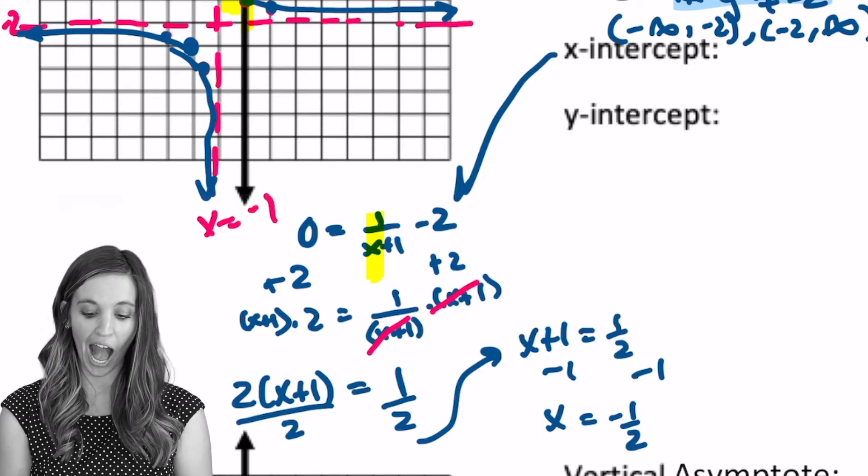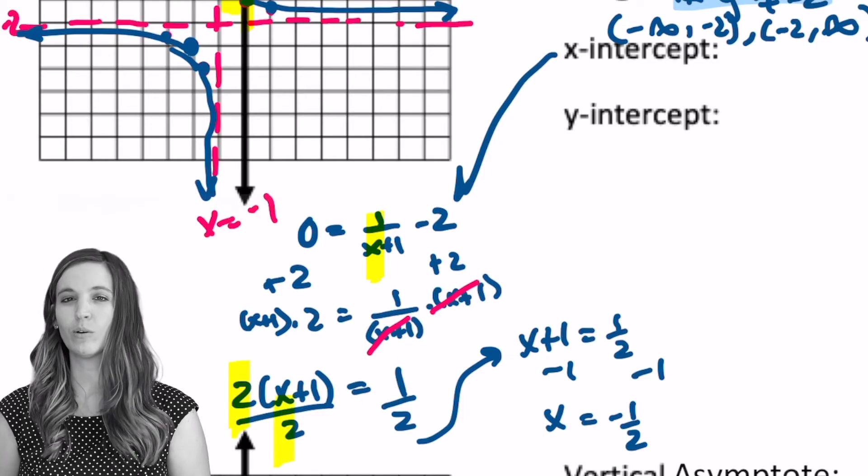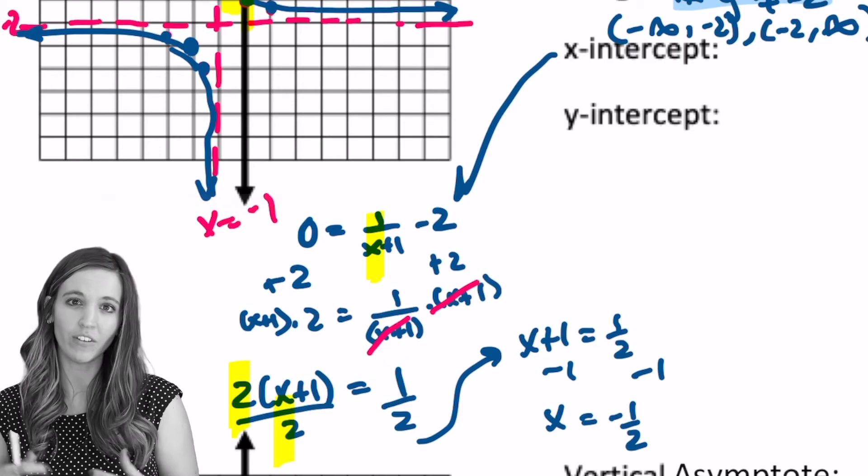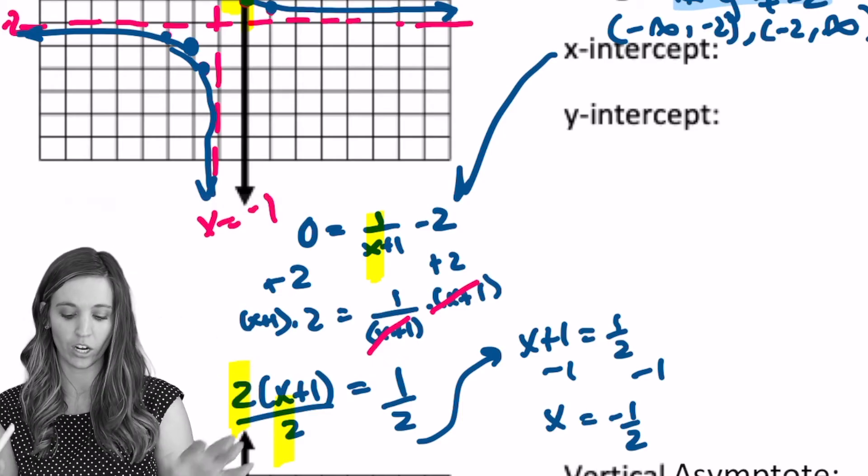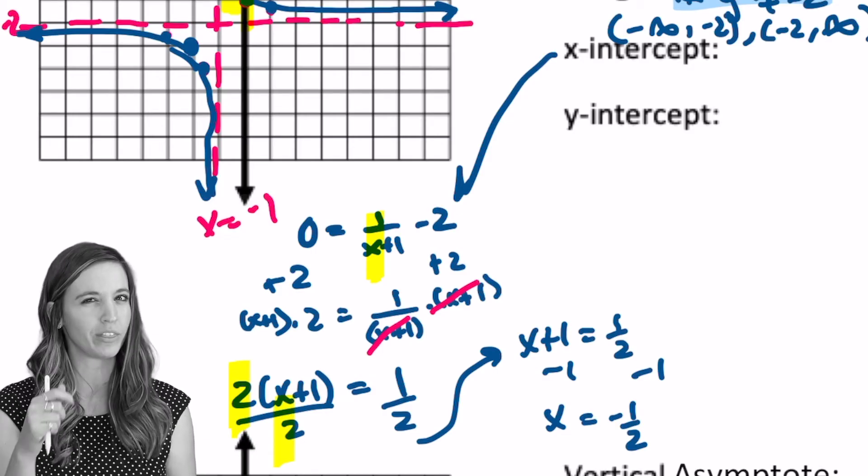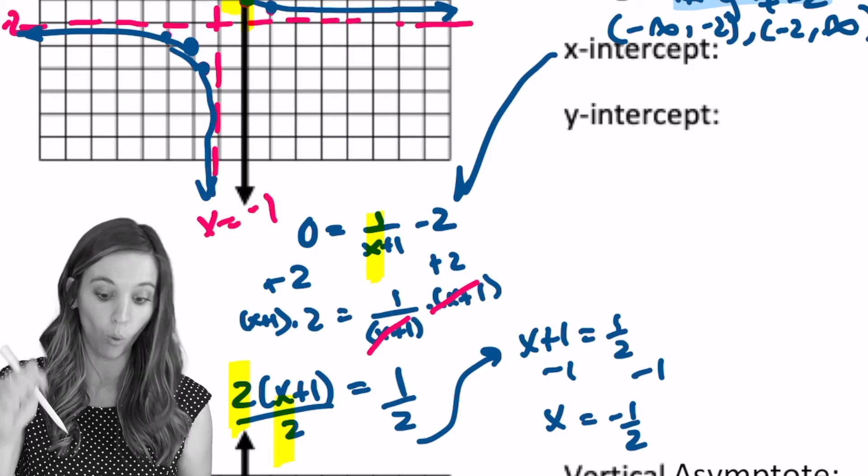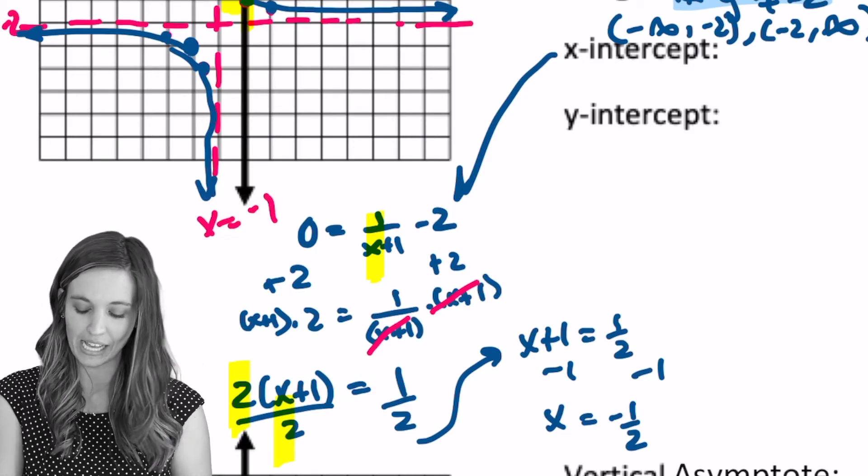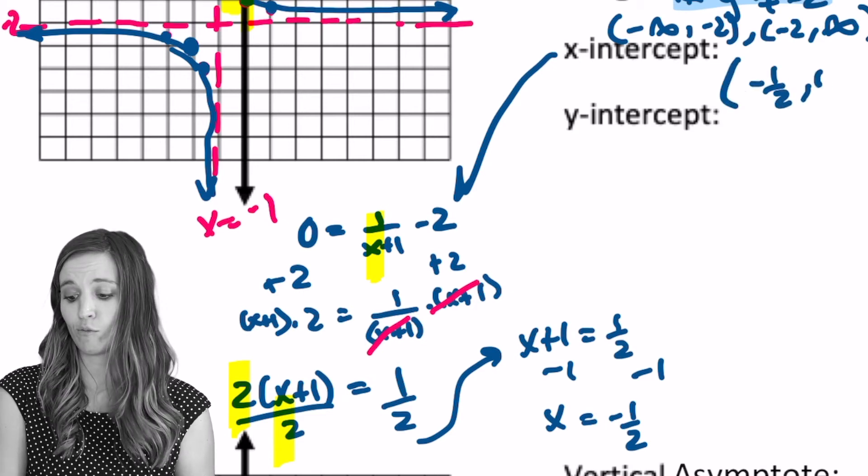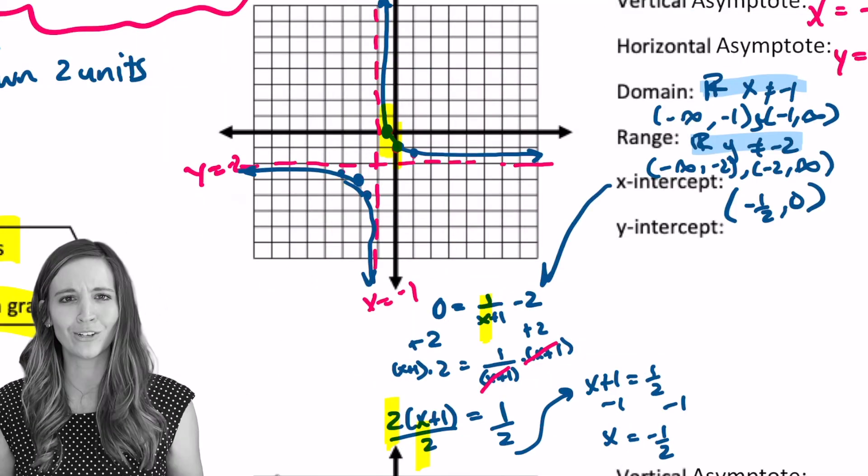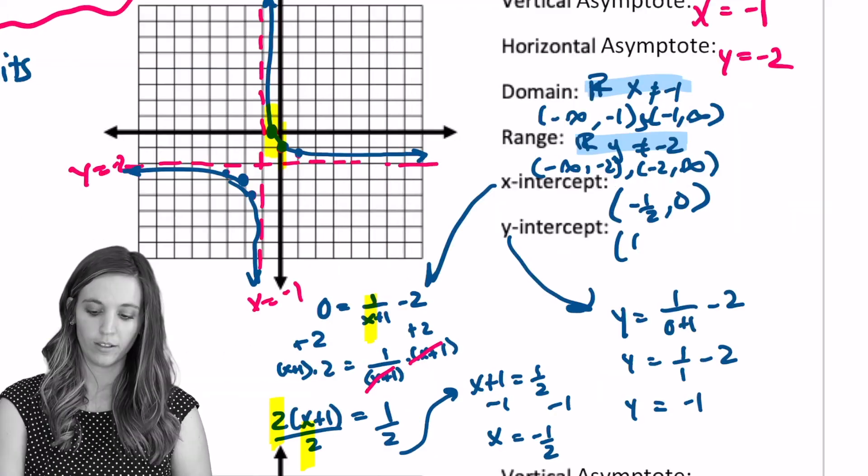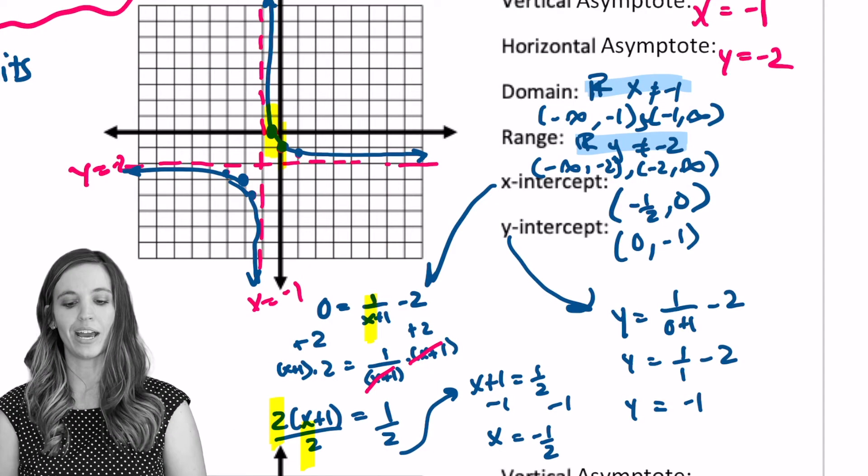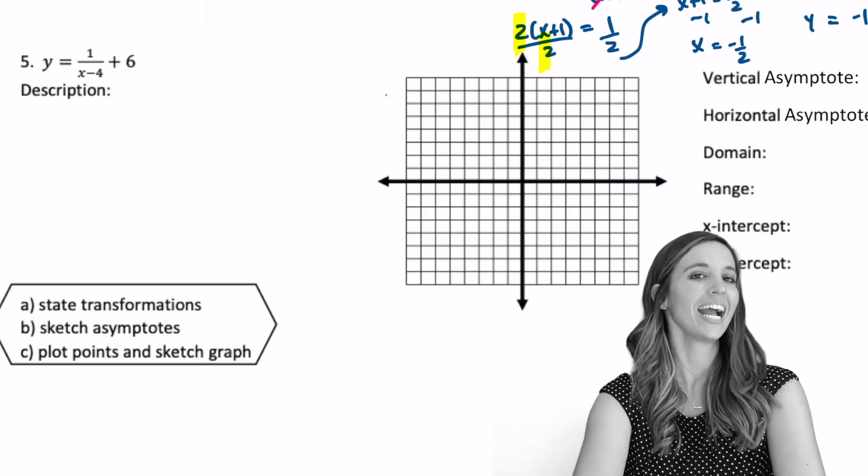Well, look at that. I get x equals negative 1 half. Now, notice something. I decided to divide off my 2 and not distribute it. When I was solving, you could totally distribute the 2 and solve for x. We'd get the same answer. So I get x equals negative 1 half, but this is an intercept, so it's a point. So I need to make sure I write this as an x-intercept. Negative 1 half comma 0. Y-intercepts. We're used to finding those. Plug in 0 for x. Go find it. Looks like my y-intercept is 0, negative 1.